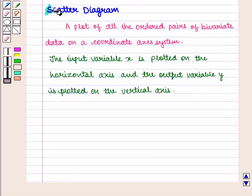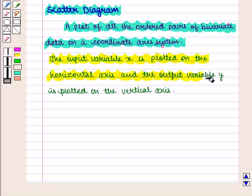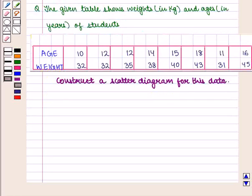Now here we are going to discuss scatter diagram, which is a plot of all the ordered pairs of bivariate data on a coordinate axis system. The input variable x is plotted on the horizontal axis and the output variable y is plotted on the vertical axis.